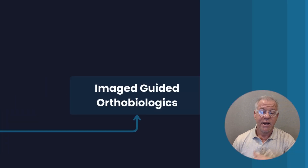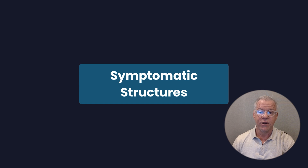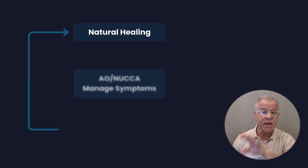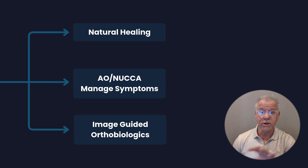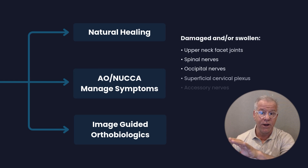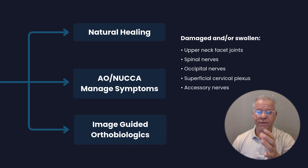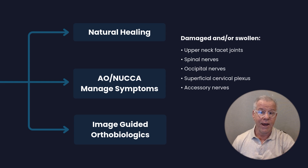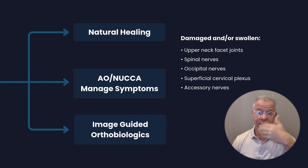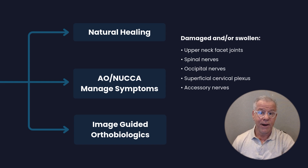That might mean focusing on the weak primary stabilizers or the overloaded secondary stabilizers, with things like dry needling or image-guided orthobiologics. As far as symptomatic structures are concerned, these are structures in your neck that are causing symptoms — things like upper neck joints or various nerves that need to be treated. These might heal naturally. You can try AO or NUCCA to align things and take pressure off, or use very precise image-guided orthobiologics.